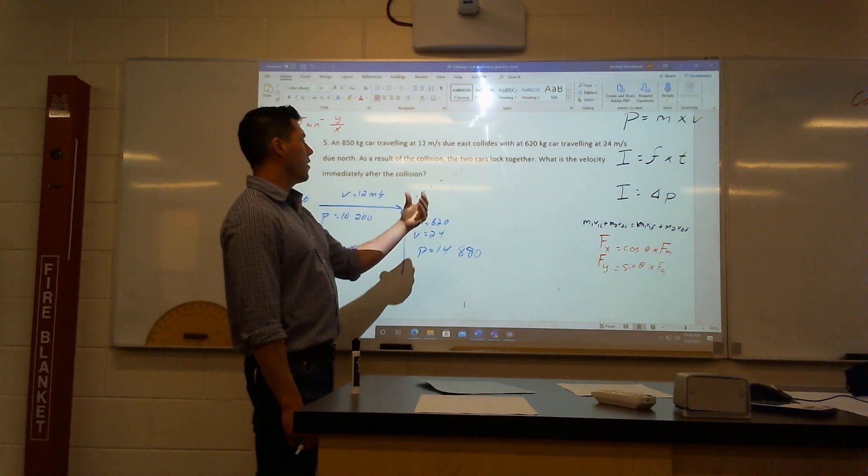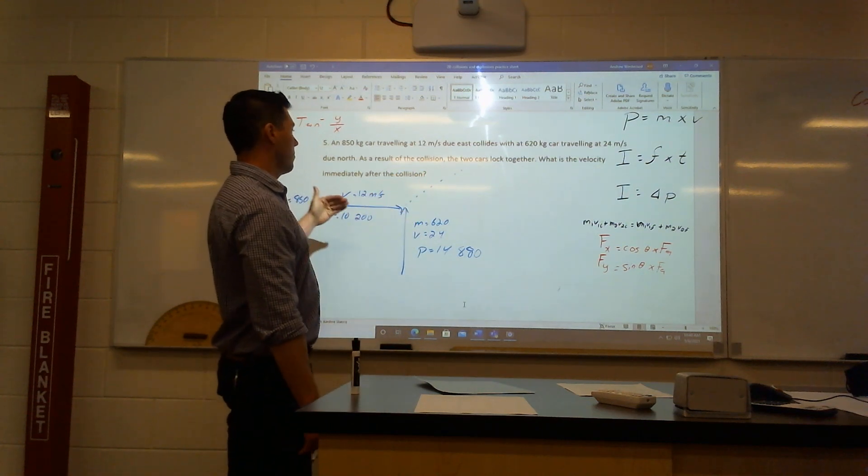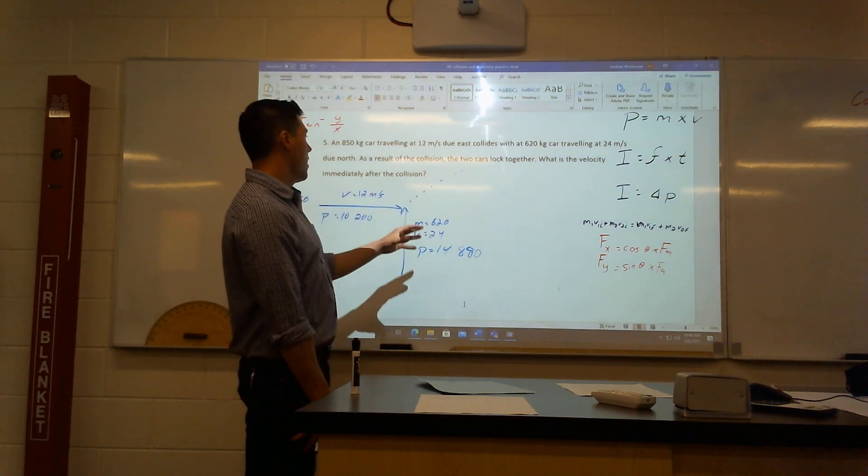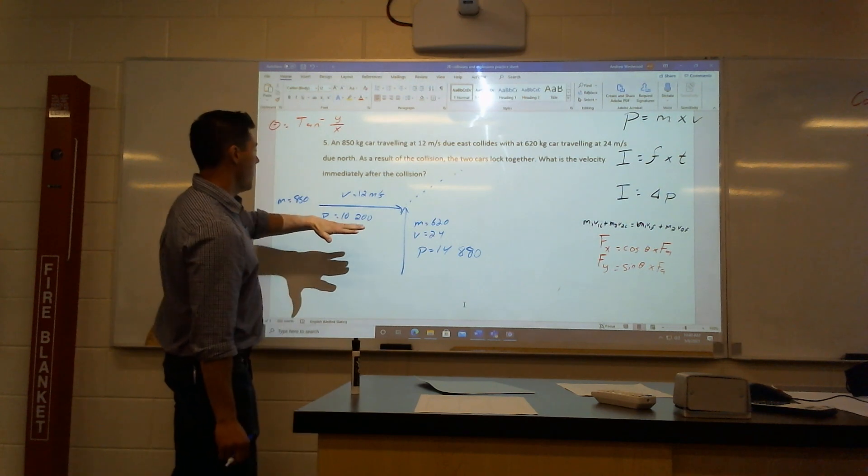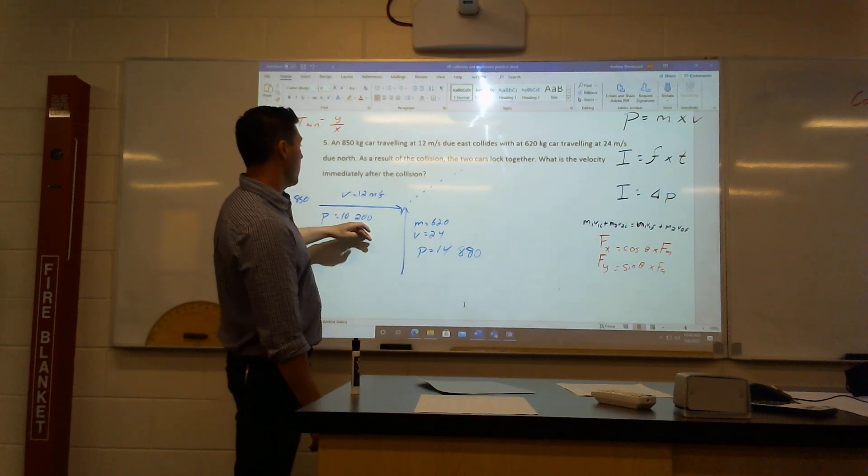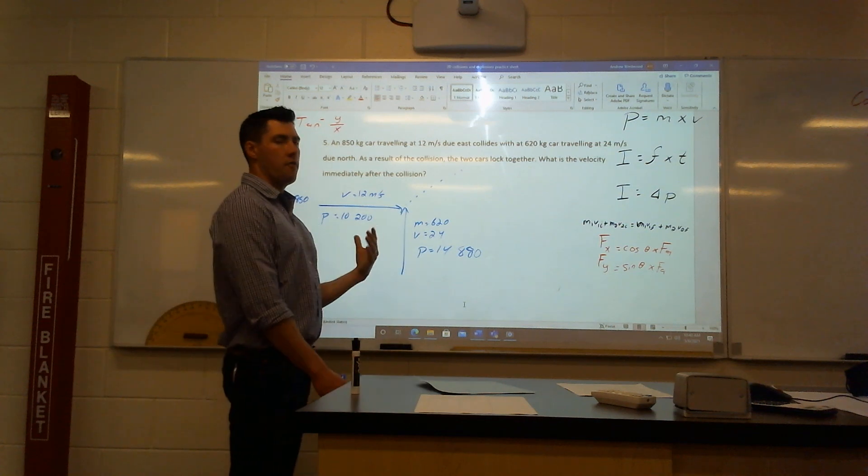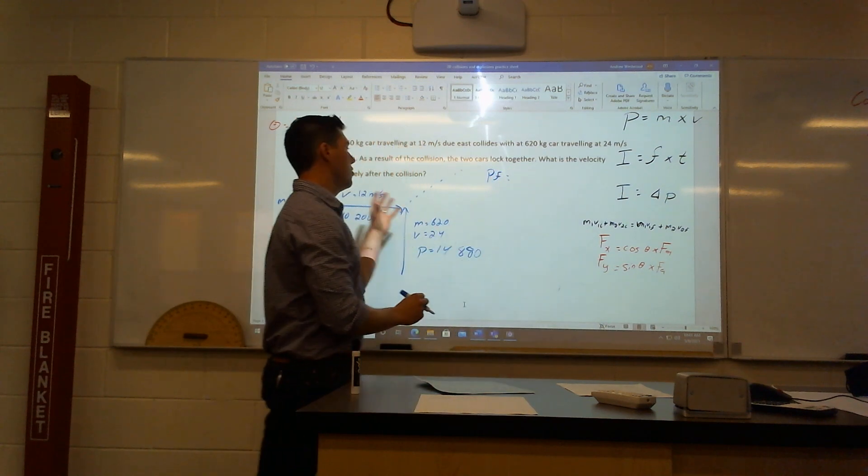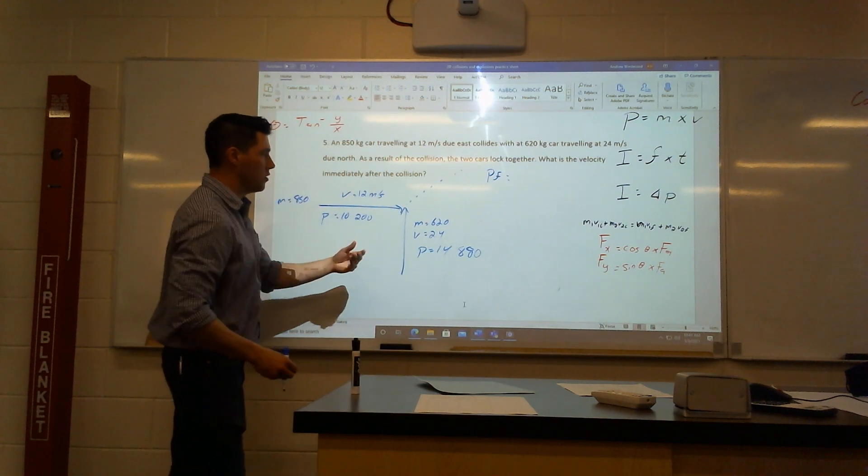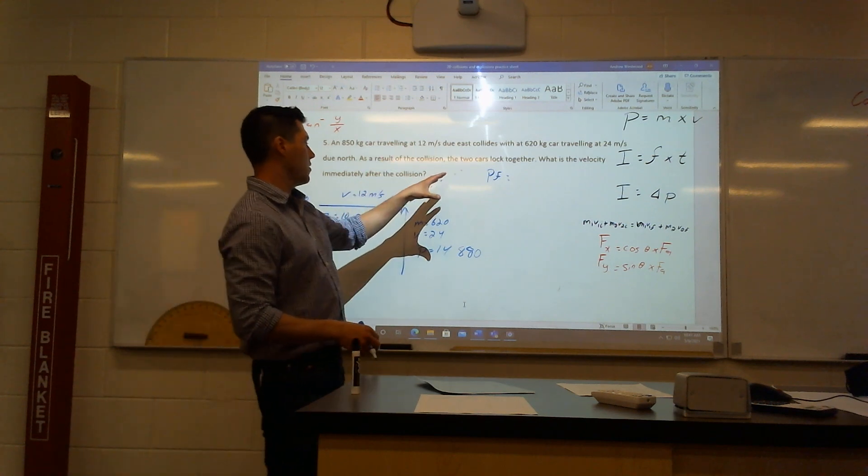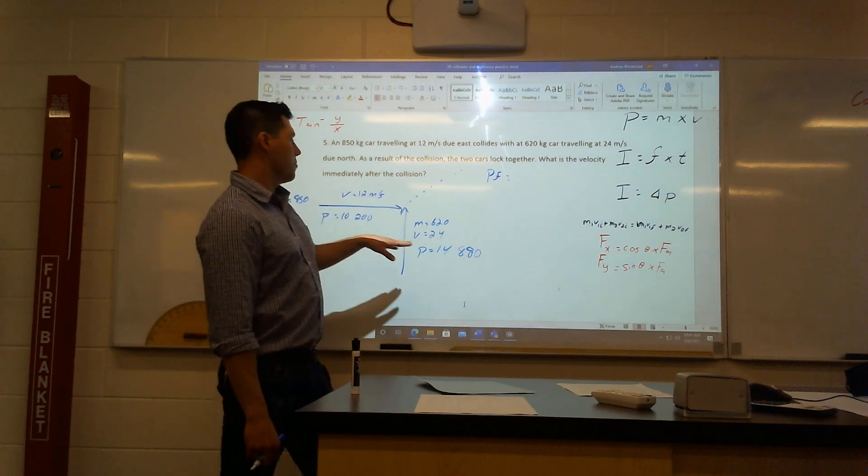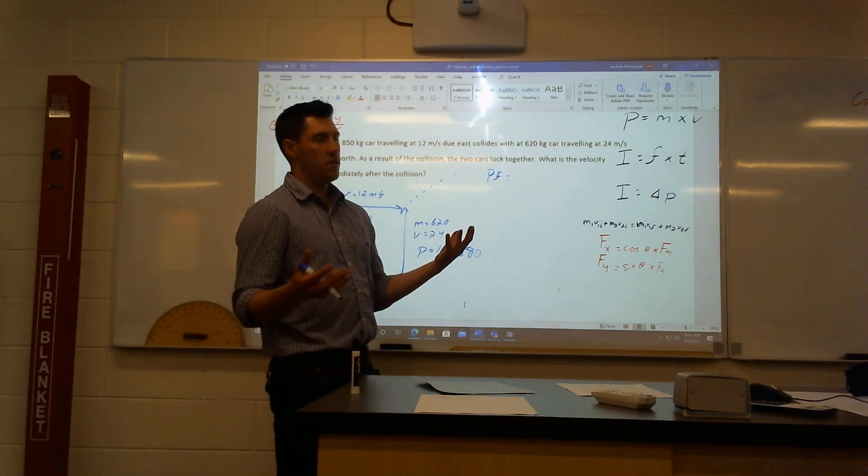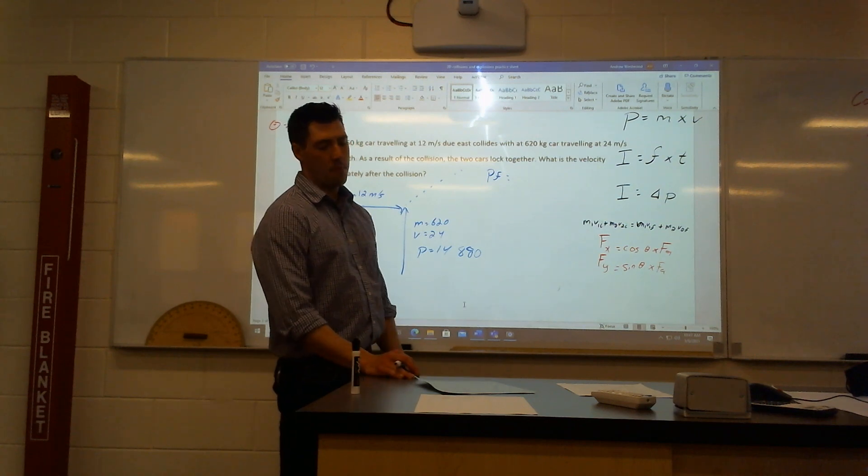When these two cars lock, they're going to stay together and move off together. You can imagine because there's an east and a north, it's going to head northeast. So let's put these together. It means I'm going to have to combine this momentum and this momentum in vector form. So I want to find what momentum final is here. Because they're two different components going different directions, I need my a squared plus b squared to figure this out.